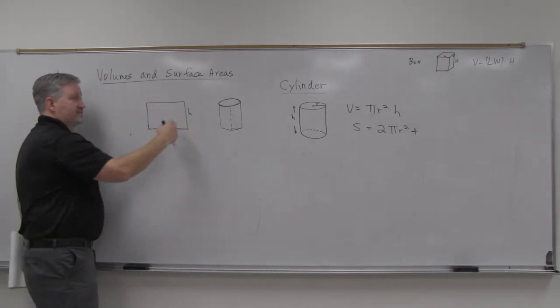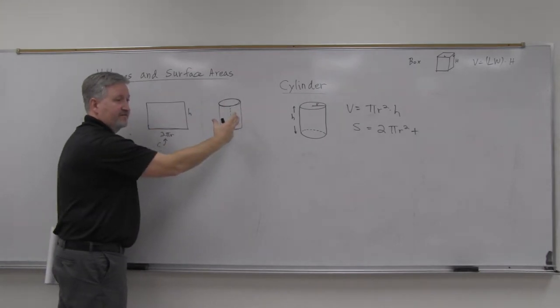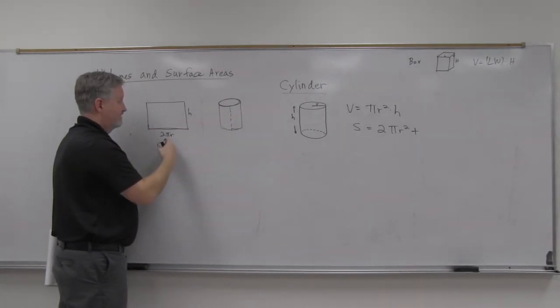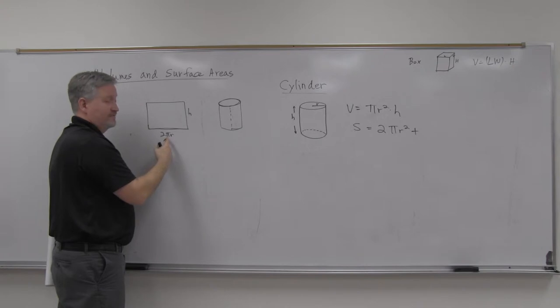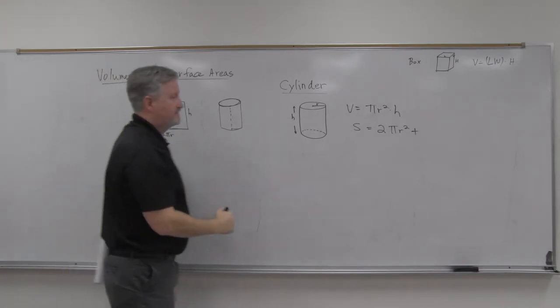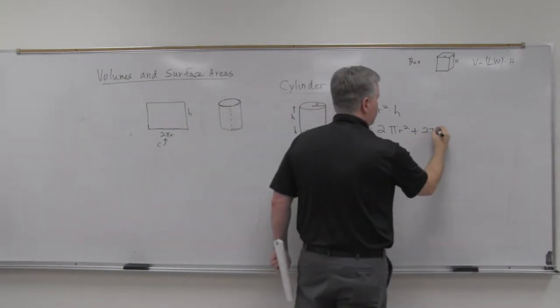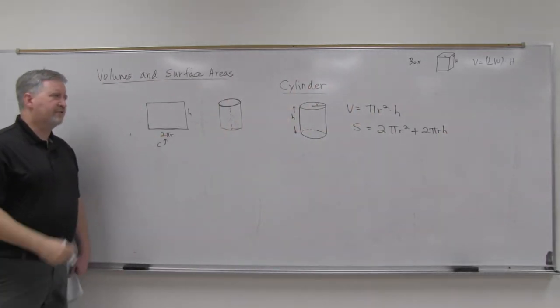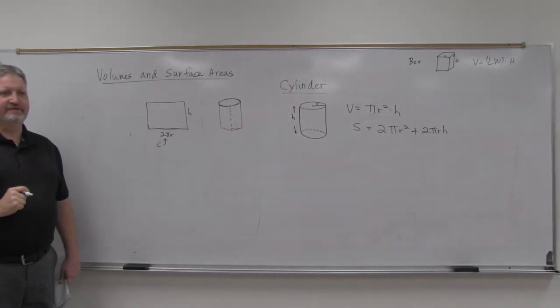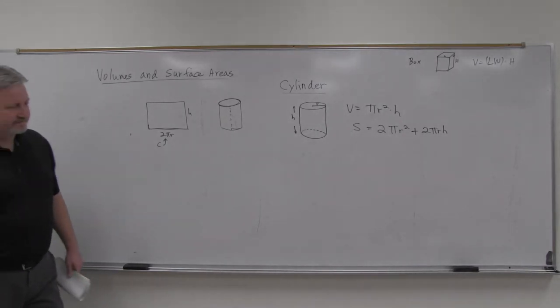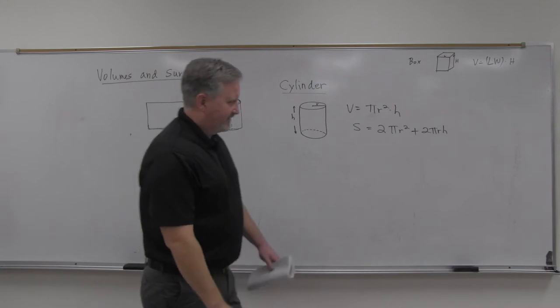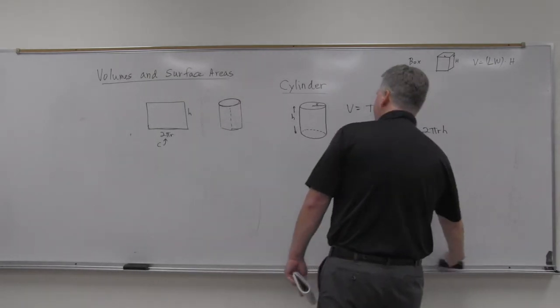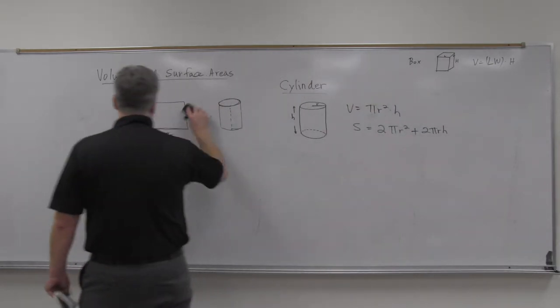So the area of this middle part of the cylinder can, if you lay it out flat, it's a rectangle, 2 pi r times H, and so that's the surface area of the cylinder. So it's just a formula, you will have to calculate the surface areas there.